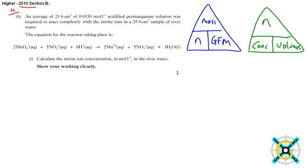If it's balanced, we know the ratio of acidified permanganate solution, which is this here, to nitrate ions, which is this, nitrate ions.